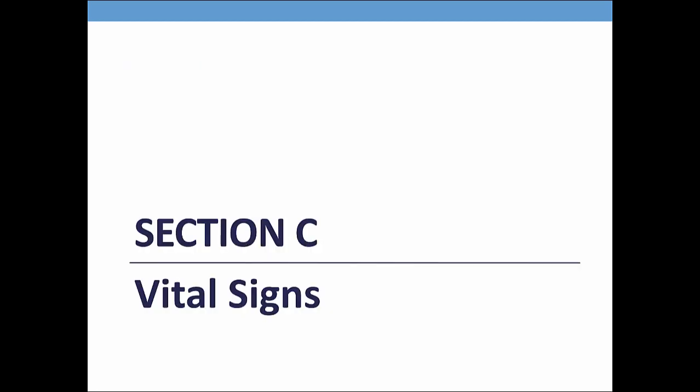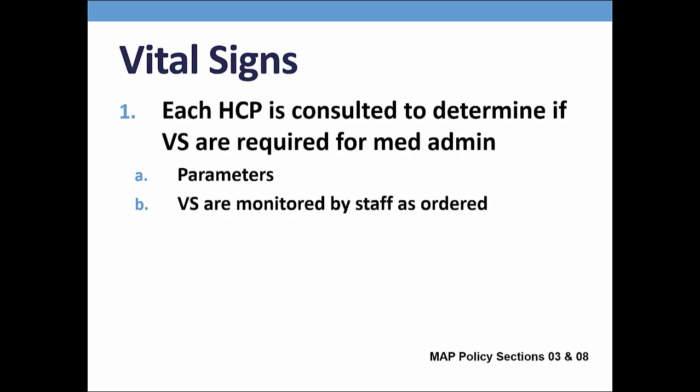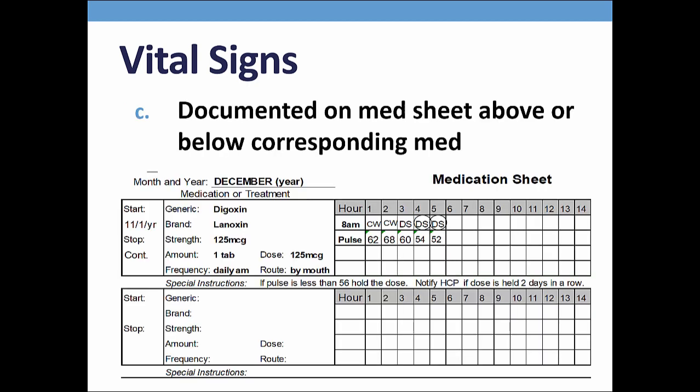Section C: Vital Signs. There is a requirement to consult with the HCP to determine whether or not vital signs are needed in relation to med administration. To meet this requirement, order forms typically include a statement such as 'if vital signs are required, please include the parameters.' Parameters are written guidelines so that staff know what to do if the vital signs they take are not within the parameter as ordered. This is an example of the requirement to document the vital signs taken — in this case a pulse — on a med sheet near the corresponding medication. You can see in the Special Instructions section the parameters ordered, what to do if the pulse is outside of the parameter, and when to notify the HCP.